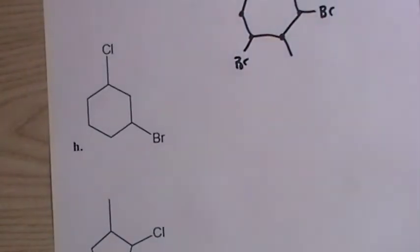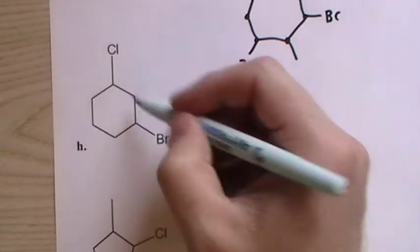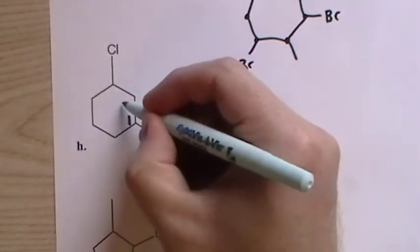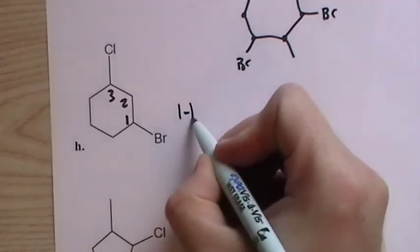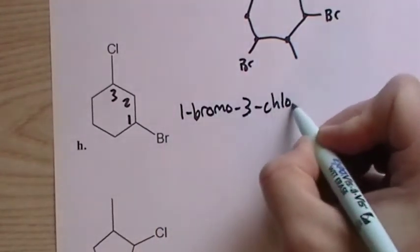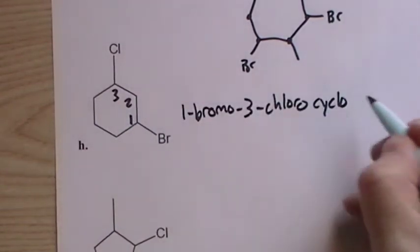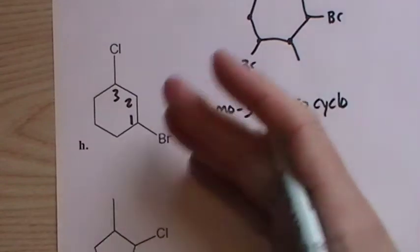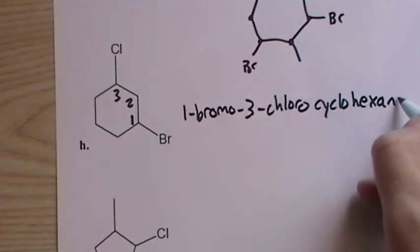Now, when we get to naming cycloalkanes, well, this is cyclohexane. Now, which one do we choose? Well, there's only two substituents. We go alphabetically. One, two, three. This is the only way that we could do it. So it's going to be one, bromo, three, chloro. So when you have two substituents, it's really easy. You just go alphabetically.